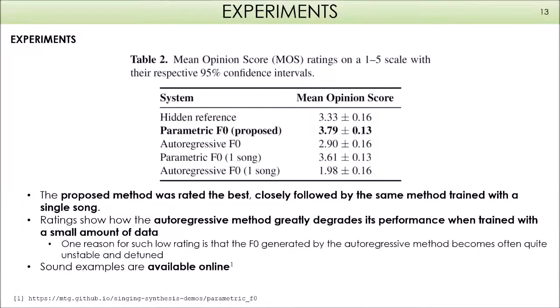This table summarizes the results of the listening test. We can see that the proposed method was rated best and closely followed by the same method when trained with a single song. Also, the ratings show how the autoregressive method greatly degrades its performance when trained with a small amount of data, and one reason is that F0 becomes often quite stable and out of tune. Finally, sound examples are available online in the bottom link.